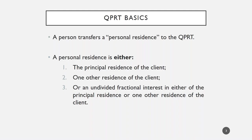We're going to start with a QPRT discussion first. A person transfers a personal residence to the QPRT — that's how the trust gets funded. The personal residence is defined as either the principal residence of the grantor, one other residence of the client, or an undivided fractional interest in either the principal residence or another residence. So again, it's either the principal residence, a vacation residence, or a portion of either of those two residences.